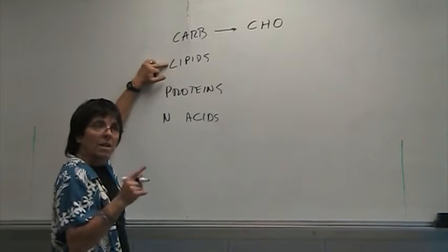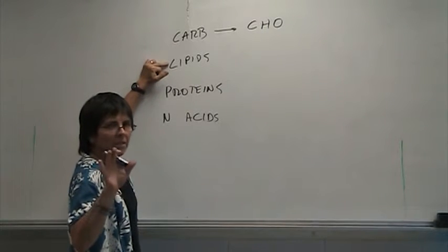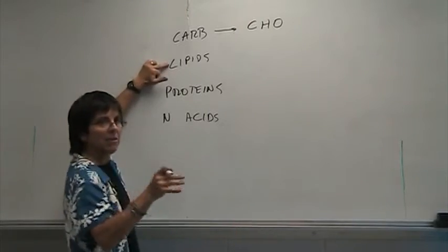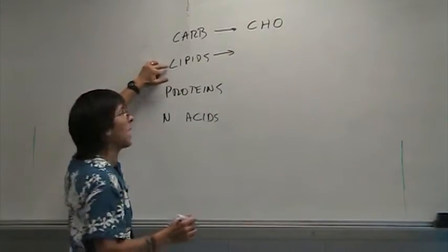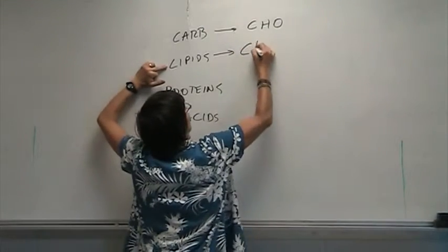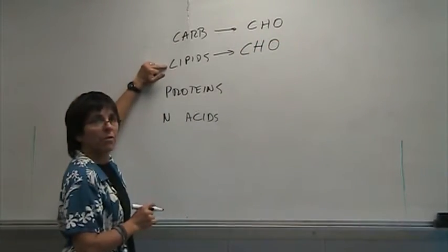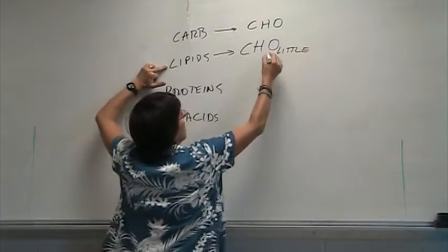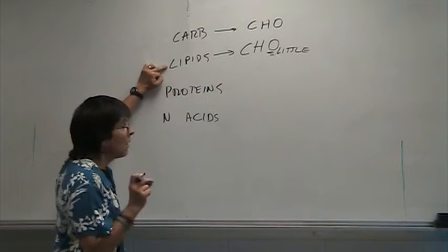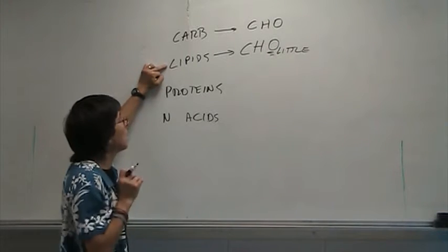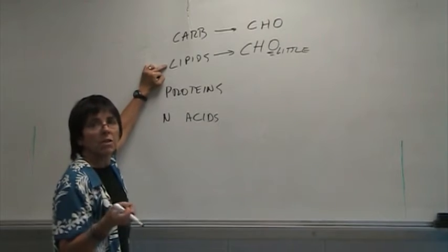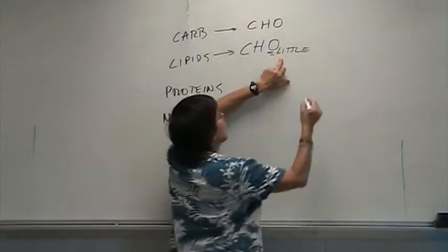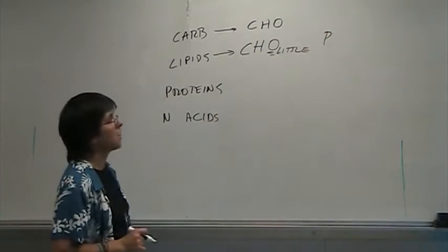If you look at your lipids — mostly your fats and cholesterol, not your phospholipids, but the most common ones, the triglycerides — you're going to see that lipids are also made of CHO but with very little oxygen. If we are talking about phospholipids, in addition to those elements, phospholipids will also have phosphorus, so it will be CHOP.